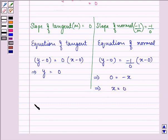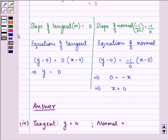So the answer to this part is equation of the tangent as y is equal to 0, and that of normal is x is equal to 0.